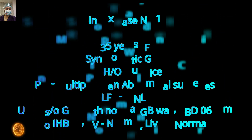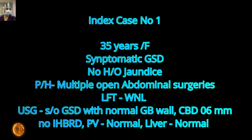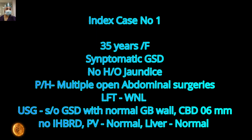Coming to the first case: this was a 35-year-old female with a history of symptomatic gallstone disease and no history of jaundice. The patient had multiple prior open abdominal surgeries — she had a colonic (sigmoid) injury during a cesarean section that led to fecal peritonitis, for which a colostomy was performed. She later developed a burst abdomen which was managed. She now presented for cholecystectomy for symptomatic gallstone disease. Ultrasound was normal with normal gallbladder wall, CBD was 6 mm, no intrahepatic biliary radicle dilatation, portal vein was normal, and liver was normal.